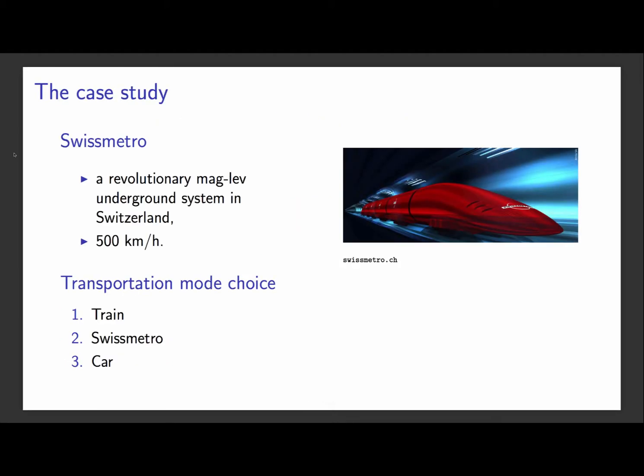The case study that we will be looking at is called SwissMetro. SwissMetro is a revolutionary maglev underground system that has been designed in Switzerland and which is planned to run at 500 km per hour.